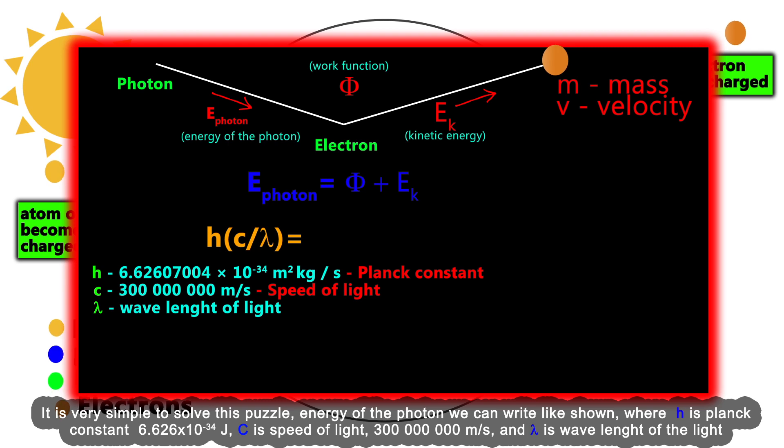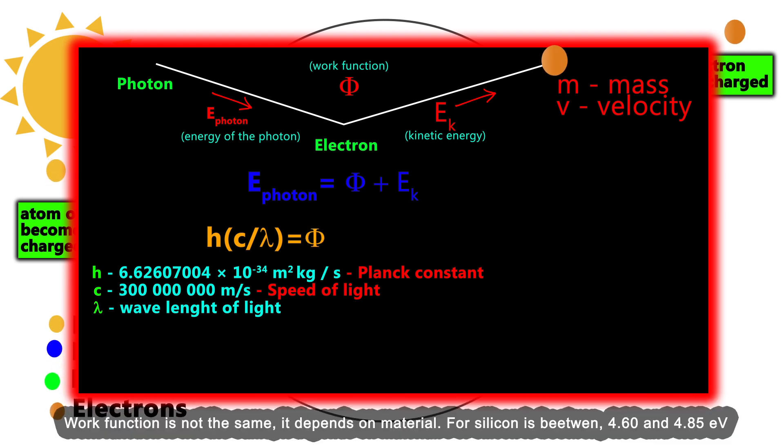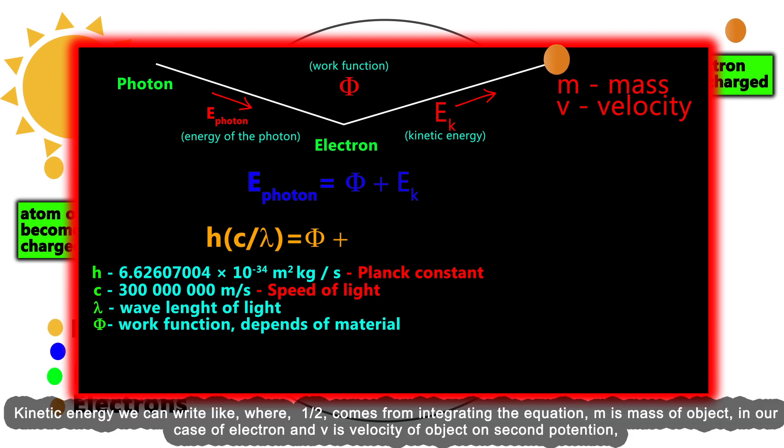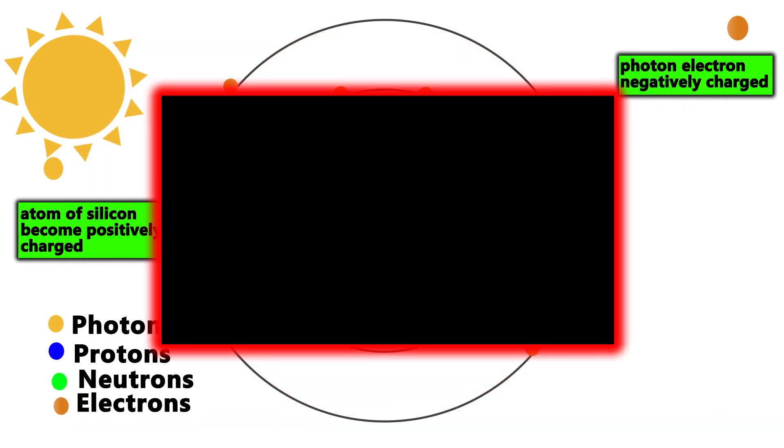The work function is not the same; it depends on the material. For silicon, it is between 4.60 and 4.85 electron volts. Kinetic energy we can write as shown, where one-half comes from integrating the equation, m is the mass of the object (in our case, the electron), and v is velocity of the object squared.